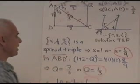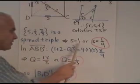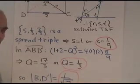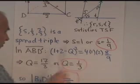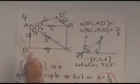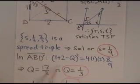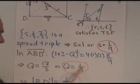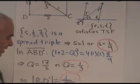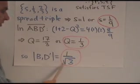So these three numbers satisfy the triple spread formula. It's a quadratic equation. You solve it as usual, you get two values: S equals one or S equals one-ninth. S equals one is impossible, that would be perpendicularity. So we have S equals one-ninth. Then back up here, once we know that's one-ninth, then in this triangle here, the cross law gives us this expression for Q. We solve it, we get 17 over 3 or one-third. That's too big. The right answer is one-third. And so the separation between the two points, the distance, is 1 over the square root of 3.